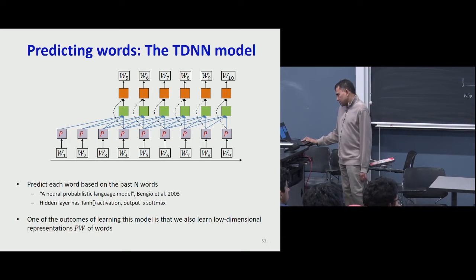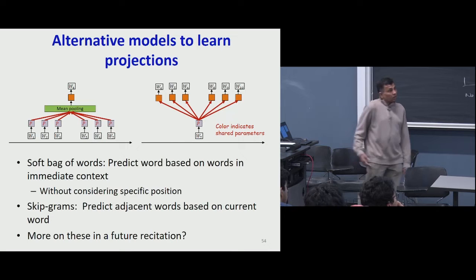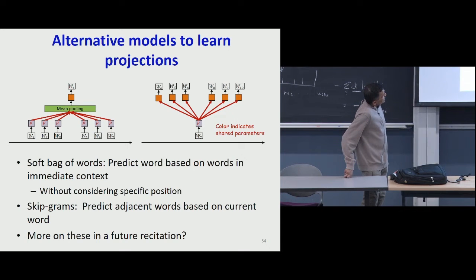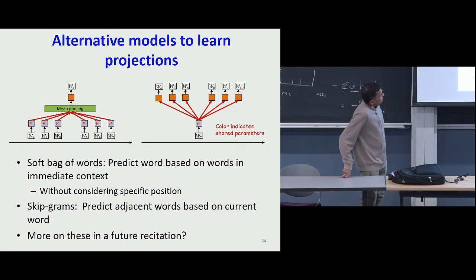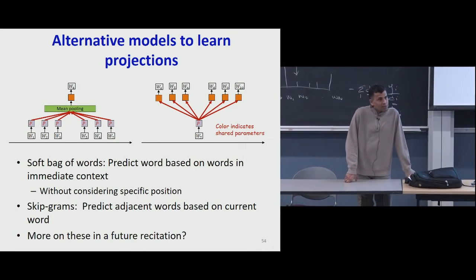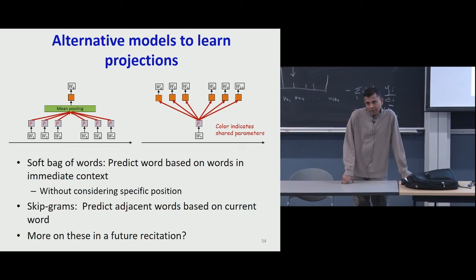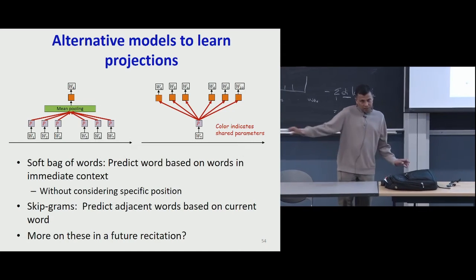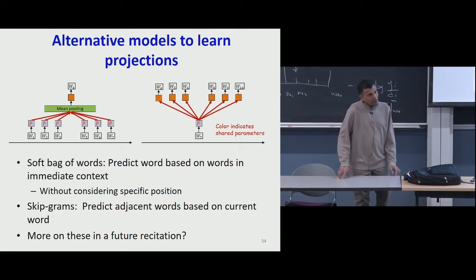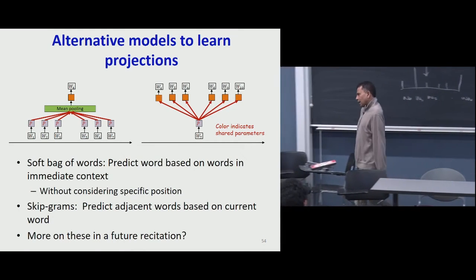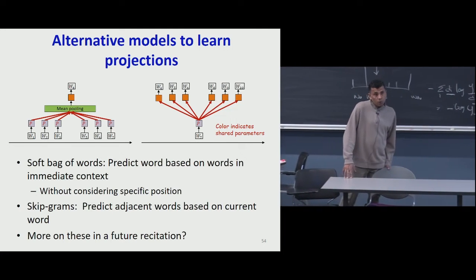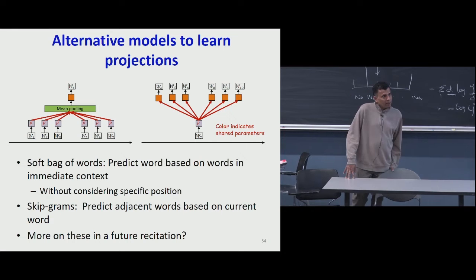For iterated structures, there are alternate formalisms. There are soft bag-of-words models where the model tries to predict a word based on words in the immediate context both to the left and right — the purpose is not so much to learn to predict as to learn the projection most effective in capturing a lower-dimensional representation of the word. Or you have skip-grams, which predict both adjacent words on both sides of a word based on the word. Things you will actually encounter later in your projects or in class are models like BERT and transformer nets, which do a more complicated variant of exactly the same problem to learn such representations.